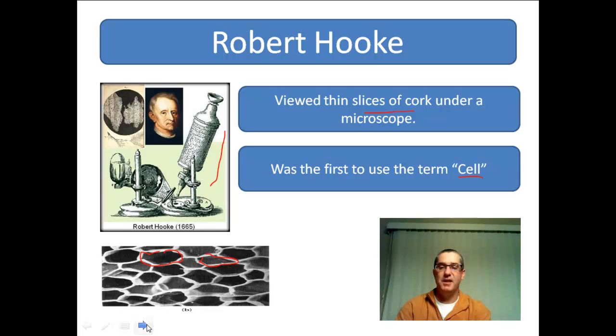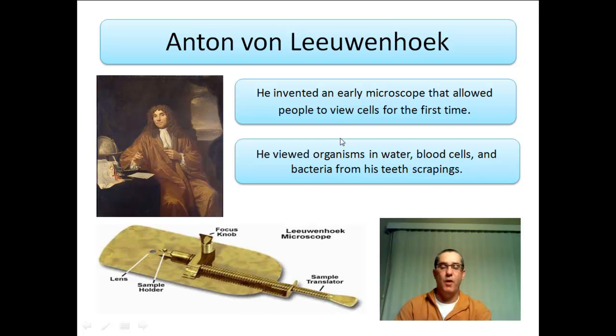The next scientist, Anton von Leeuwenhoek, also had a very primitive microscope — you can see it looked much different from Hooke's. You can see the basic parts of his microscope: the part I'm circling is where his lens was, and this part here is where he could adjust the focus for whatever specimen he was looking at.